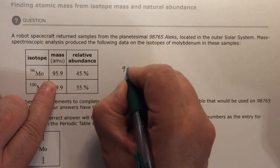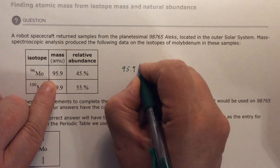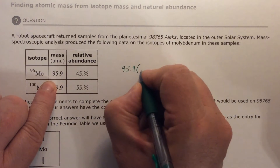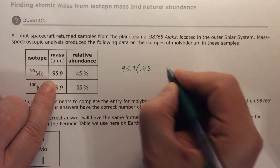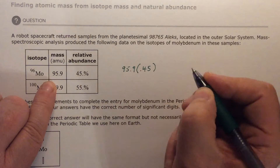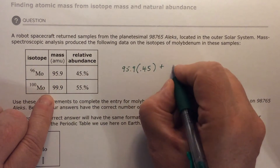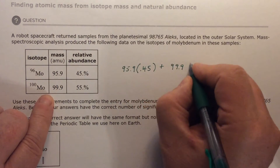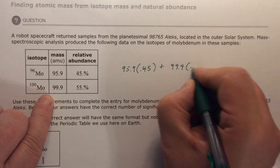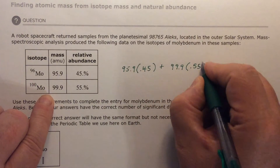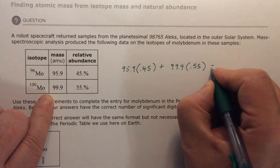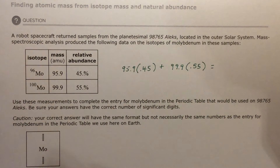So: 95.9 times 0.45, which is 45%, and then I'm going to add that to 99.9 times 0.55, which is 55%. Then I'm going to add them up, and that's going to be the mass — the mass I put here.